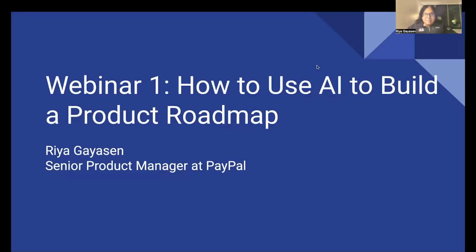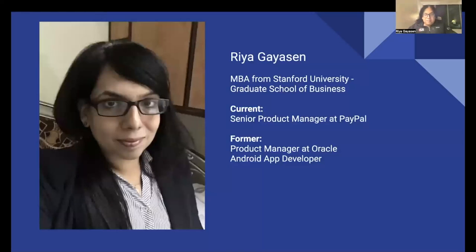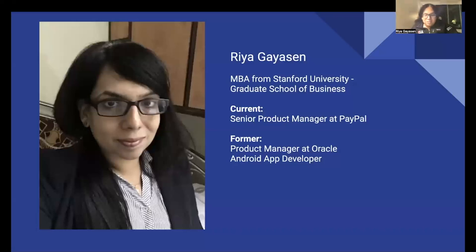A little bit about me. I graduated with an MBA from Stanford University. I'm currently working at PayPal as a senior product manager, and before this I was a product manager at Oracle. Before that, I was an Android app developer, so my career has been all about being an engineer and then transitioning to product management. During my career, especially when I was at Oracle, I shipped four separate AI-related products. And when I was a student at Stanford, I spent a lot of time figuring out how to use AI and statistics to make product decisions, and that's exactly what I'm going to talk about today.